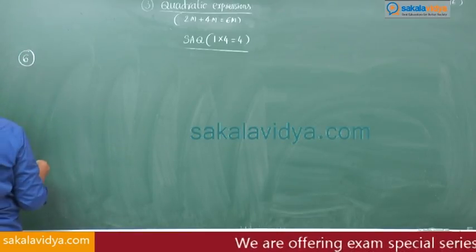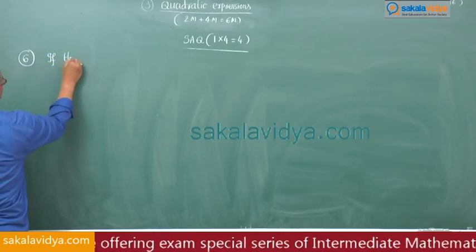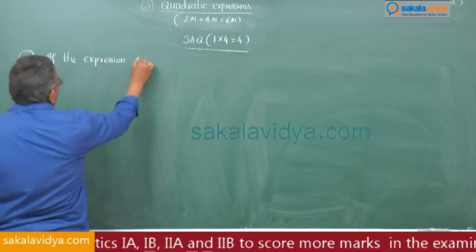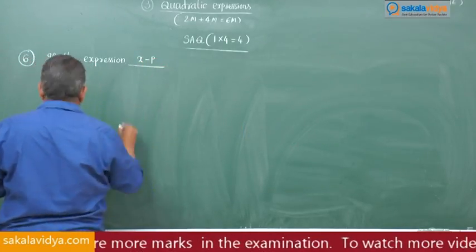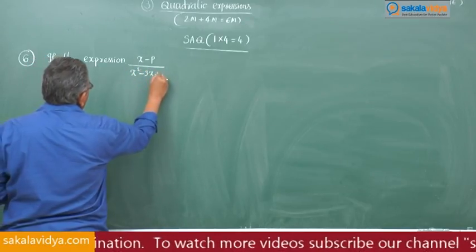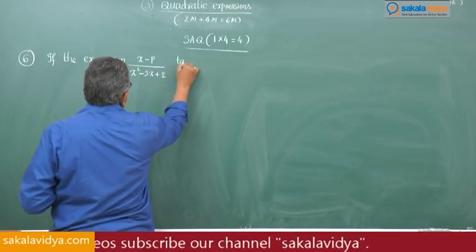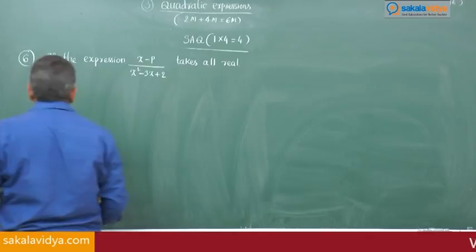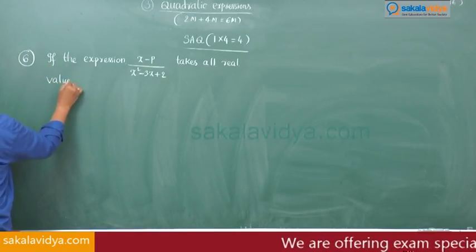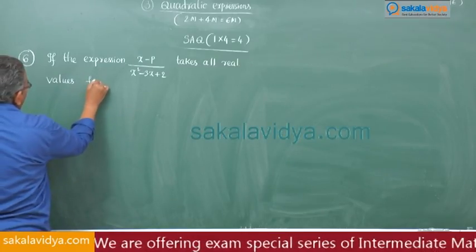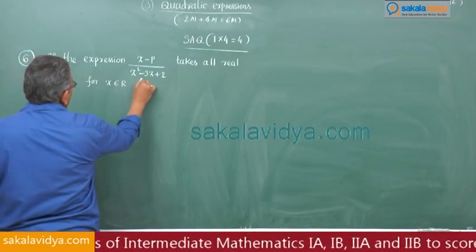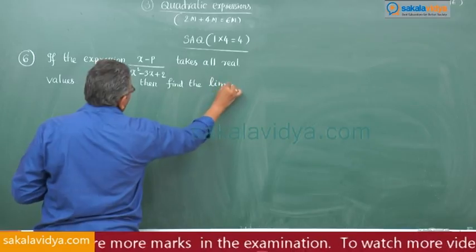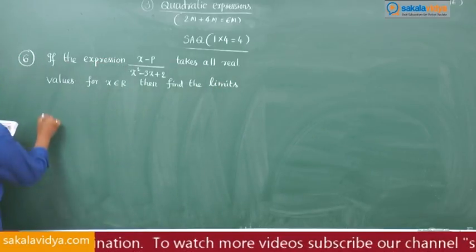Sixth problem: if the expression (x minus p) divided by (x squared minus 3x plus 2) takes all real values for x belongs to R, then find the limits for p.